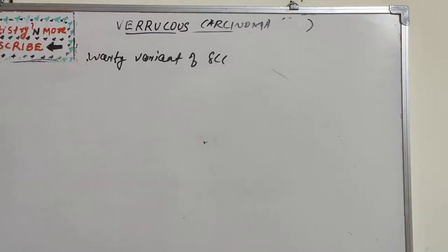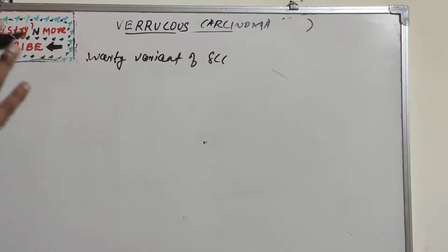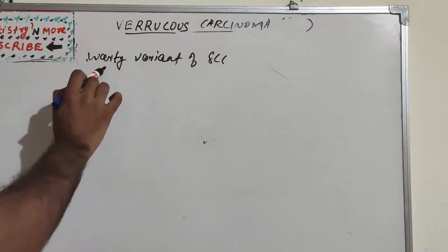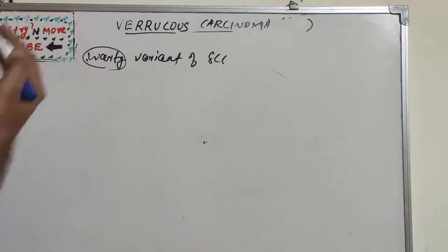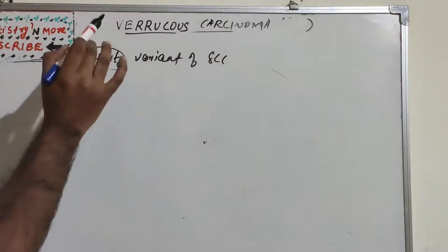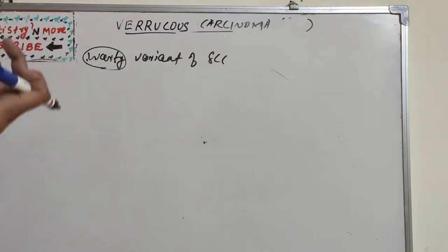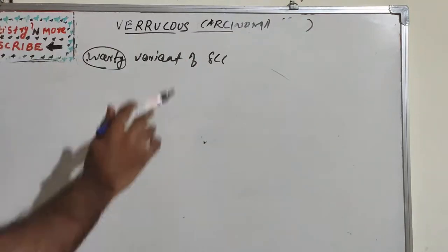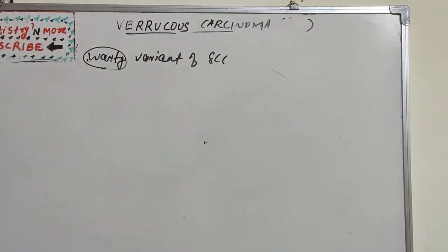Welcome back to Dentistry and More. We are continuing with malignant lesions of the oral cavity of epithelial origin. Now we have verrucous carcinoma. We already learned the benign type — verrucous lesion or verrucous vulgaris — commonly known as a wart. Verrucous carcinoma is a warty variant of squamous cell carcinoma, which we covered in detail last session. It presents a cauliflower-like verrucous appearance.